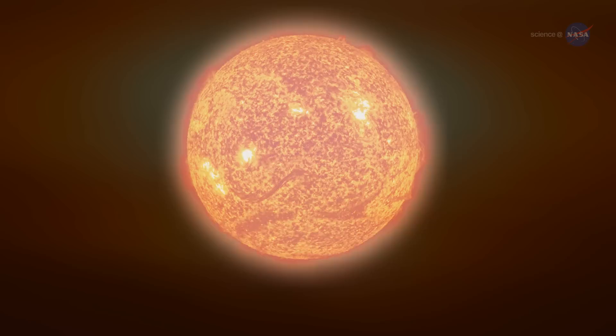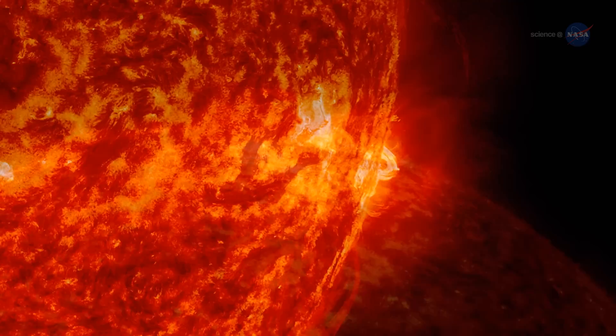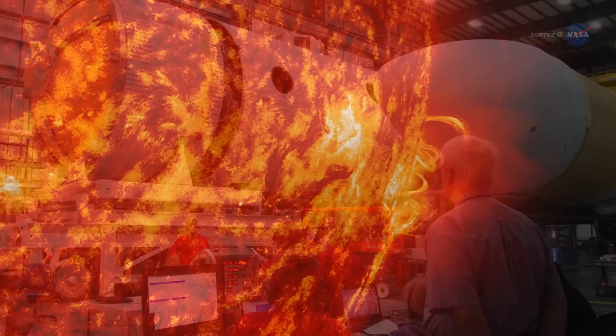People around the world look up and see our sun every day. But through a space telescope, it looks nothing like it does from down on the ground. The surface dances with arches of solar material that reach up into the solar atmosphere, an environment of charged particles and magnetic fields unlike anything we experience on Earth.